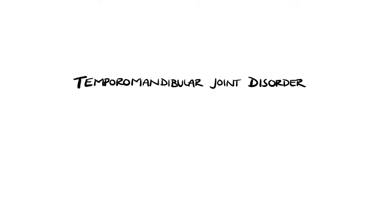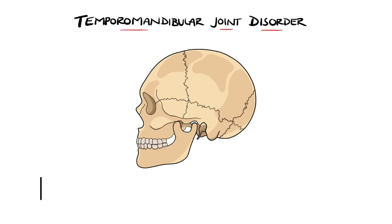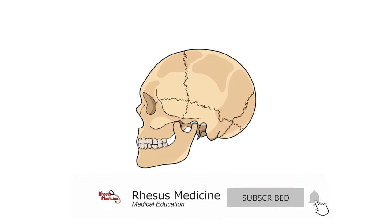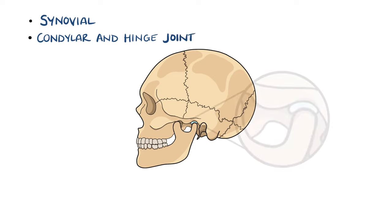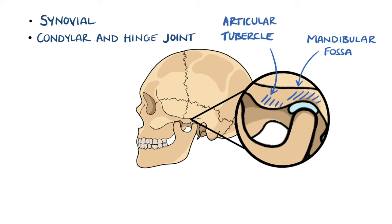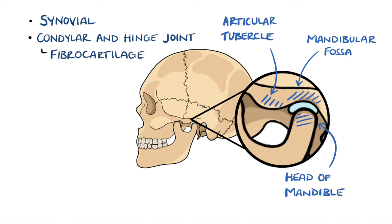Temporo-mandibular joint disorders are a group of disorders that generate pain from the temporo-mandibular joint, which may come from the joint itself or from the muscles around it. The temporo-mandibular joint is a synovial, condylar and hinge-type joint made up between the mandibular fossa, the articular tubercle and the head of the mandible. It is a fibrocartilage joint with no hyaline, and it is unique because there is a disc called the articular disc that separates the joint into two synovial cavities.